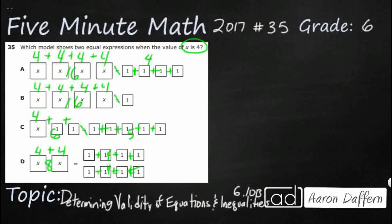Going back to A, we've got 4 x's, so we can say 4x. That's how we show multiplication here — we take the x's and multiply by how many times x shows up, which is 4. And then on the right side we could say 4 times 1, which we know is 4. So that's 4x equals 4 times 1. Looking at B, we've got 4x and just one set of 1, which is just 1.